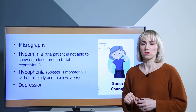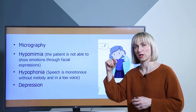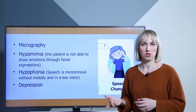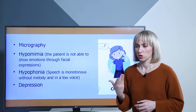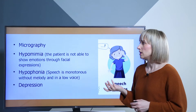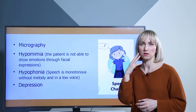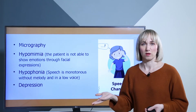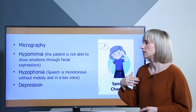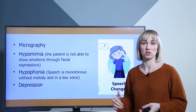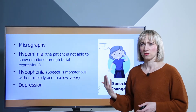Typical for Parkinson's disease is micrography — the patient writes with smaller characters. He starts with normal-sized letters and they get smaller and smaller. This is often one of the first symptoms patients notice themselves. Patients also have hypomimia, meaning they are not able to show emotions with facial expressions because the facial muscles and mimic are not activated. We also have hypophonia — speech is monotonous without any melody and the patient has a very low voice. It's also typical for patients with many years of Parkinson's disease to have depression and differences in humor.